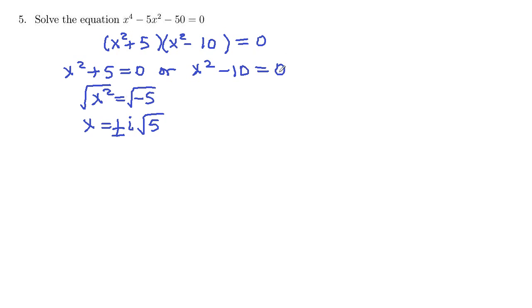For this one, bring the 10 over on the right. x squared equals 10. And then take square roots. Square root of x squared is x. And then there's a positive and a negative square root of 10, so plus or minus root 10.